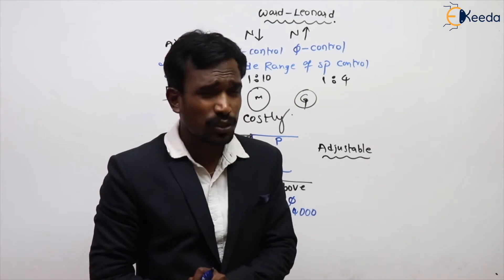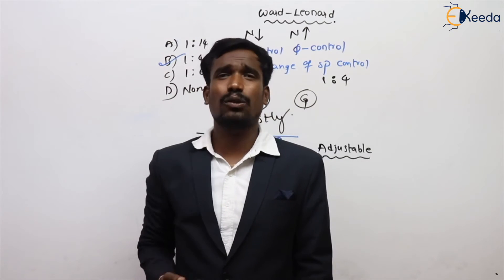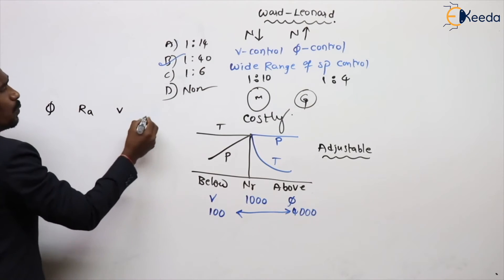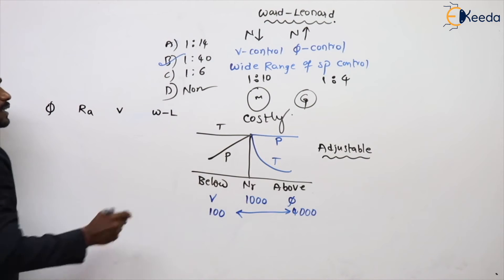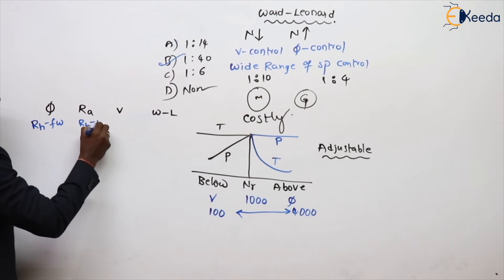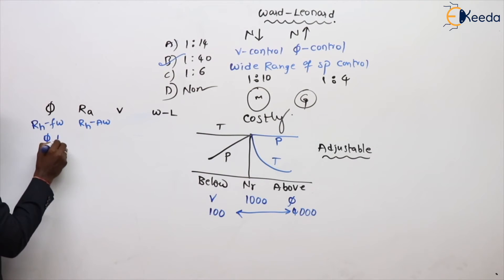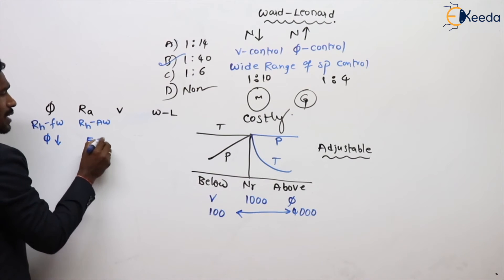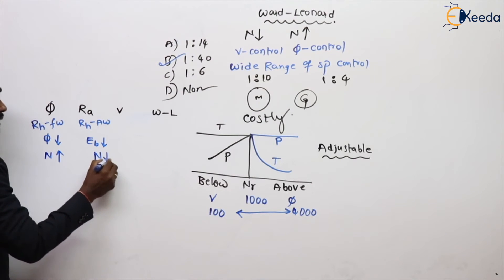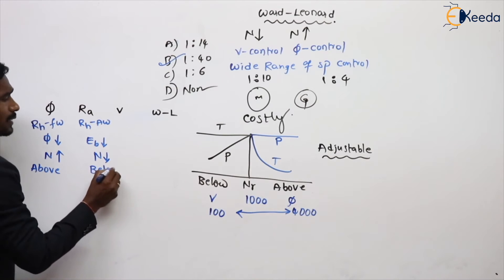So like this, the speed control methods in our DC machine are: flux control method — extra rheostat added in the field winding; armature resistance control method — extra rheostat added in the armature winding; voltage control method; and Ward-Leonard speed control method. In flux control, when resistance increases, flux reduces, so speed increases. In armature resistance control, when resistance increases, Eb reduces, so speed decreases. Flux control is only for above rated speed; armature resistance control is only for below rated speed.